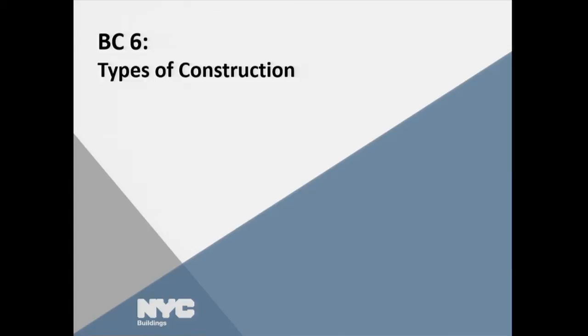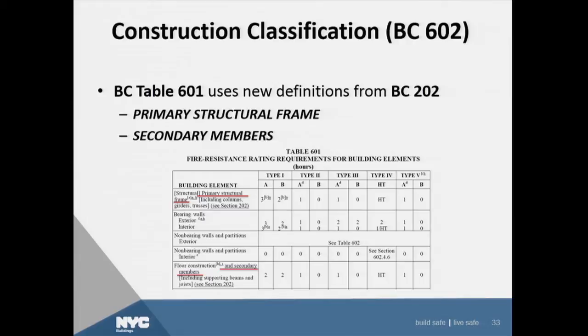Types of construction: BC Table 601 is the same as in the 2008 code. We added new definitions for primary structural frame and secondary members. A primary structural frame is the columns and main load-bearing members in the building. Secondary is everything else, and we clarified those requirements.